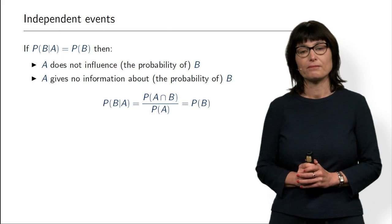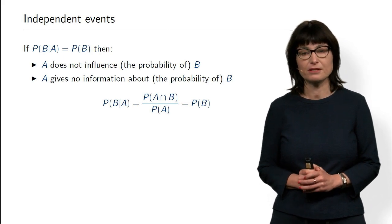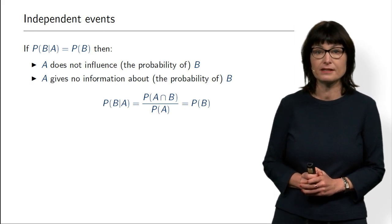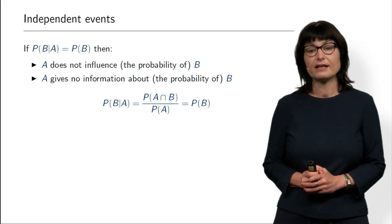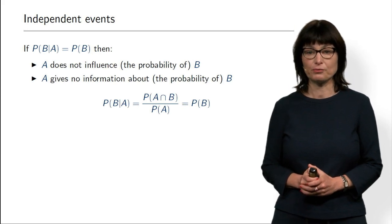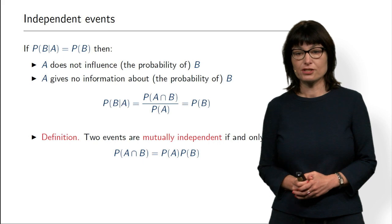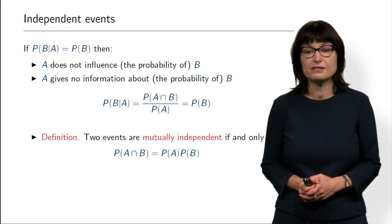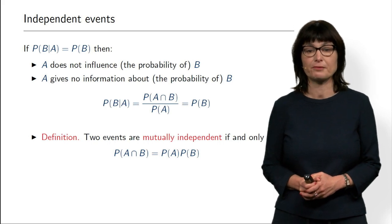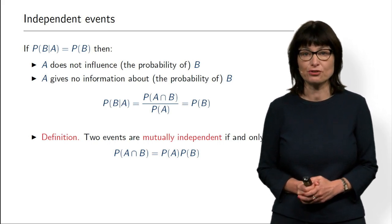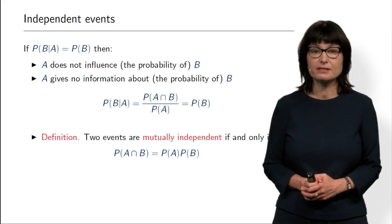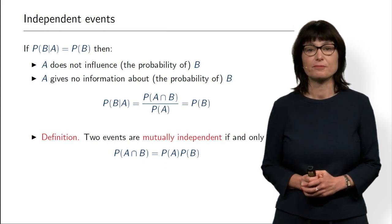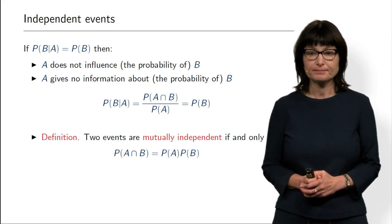So what is the formal definition? Starting with our familiar conditional probability definition: if the conditional probability of B given A equals the probability of B, then using the multiplication rule, we see that the probability of intersection is just the product of the probability of A and the probability of B. And that is exactly the definition of independent events — two events are mutually independent if the probability of them happening together is just the product of the probability of each of them.